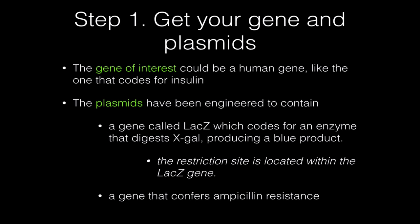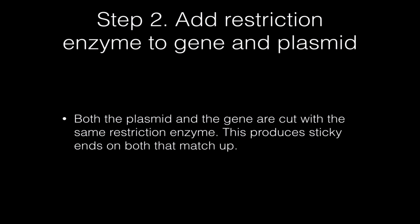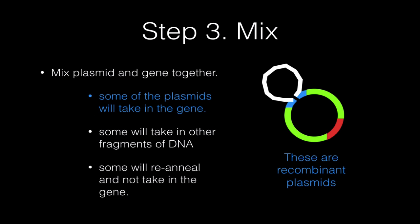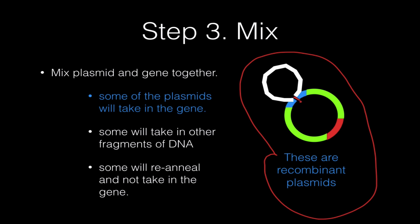Step one: get your gene of interest — for example, the insulin gene from a human — and your plasmids containing the LAC-Z gene and the ampicillin resistance gene. Step two: add the restriction enzyme to both your gene of interest and your plasmid to produce matching sticky ends. Step three: mix the restricted plasmid and the restricted gene together so that some plasmids take in the gene, producing a recombinant plasmid. Notice that when this happens, the LAC-Z gene has been literally split in two by the restriction site.